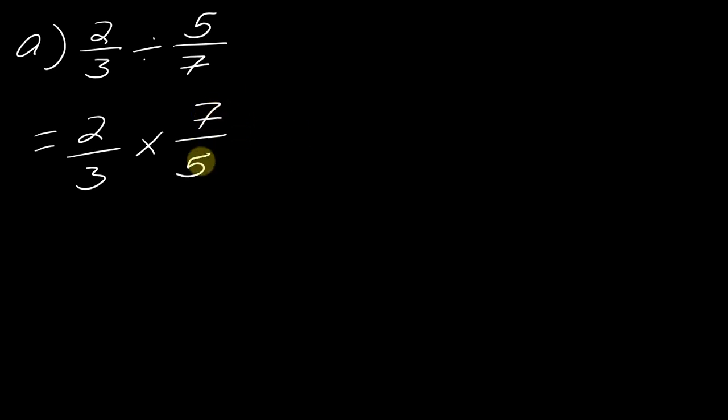So, rewrite it like this, 7 over 5. And now I can just multiply straight across. So, I'll take 2 times 7 and I'll take 3 times 5. So, I get 14 over 15 like so. Okay, so that's the idea.